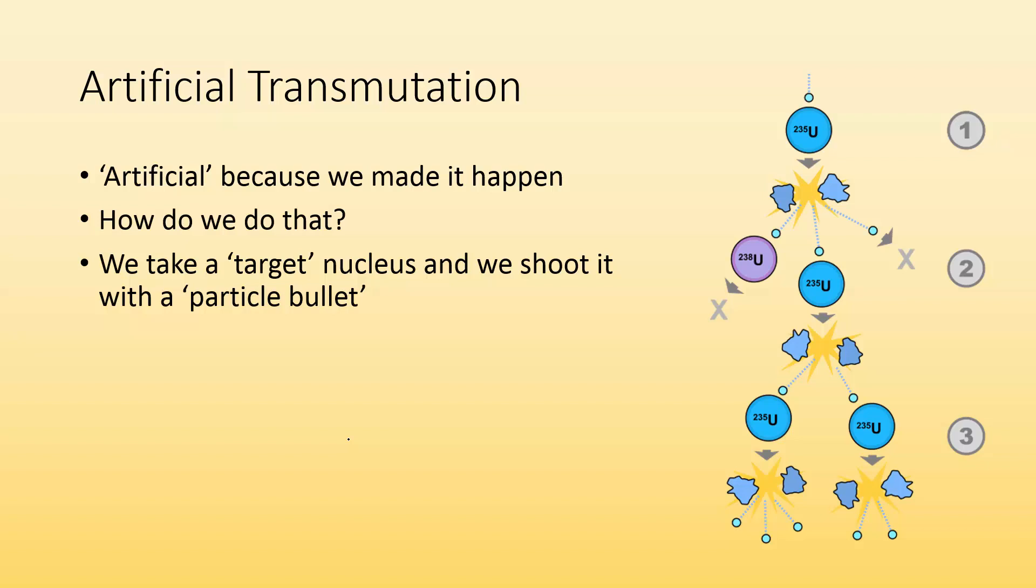Artificial transmutation - it's artificial because we made it happen. It wasn't going to happen on its own. We did something to it and caused it to undergo this nuclear change. How do we do that? Basically, we take a target nucleus, the thing we want to change, and shoot it with a particle bullet. Here's an example. We have uranium-235, and we're hitting it with a neutron, causing the uranium to split into two new elements. That's transmutation. We caused it to happen, so it's artificial.